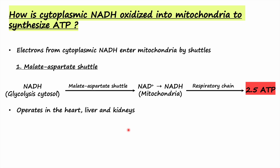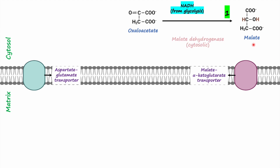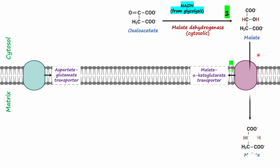This shuttle operates heavily in the heart, liver, and kidneys. Now let's talk about how this shuttle works. Here we have NADH from glycolysis in the cytosol. The first step in the malate-aspartate shuttle requires oxaloacetate, which acquires electrons from cytosolic NADH and gets reduced into malate. The reaction is catalyzed by malate dehydrogenase enzyme, which is the cytosolic enzyme. Once oxaloacetate is reduced to malate, this malate from the cytosol is then transported across the mitochondrial membrane into the mitochondrial matrix. During this reaction, NADH is oxidized to NAD+, which then enters the glycolysis pathway and ensures that glycolysis continues to function.